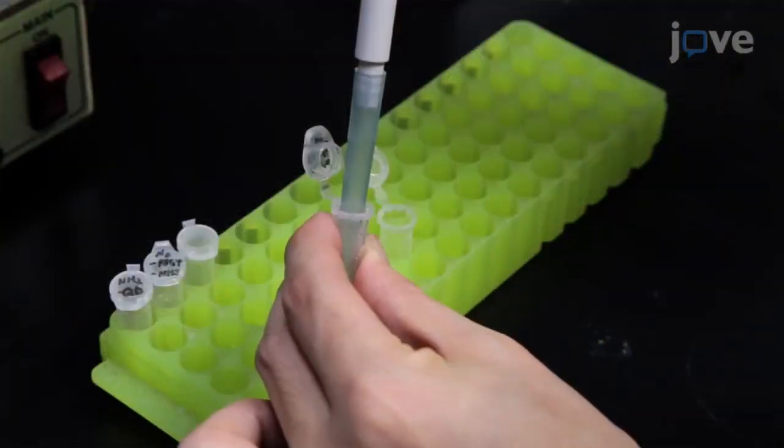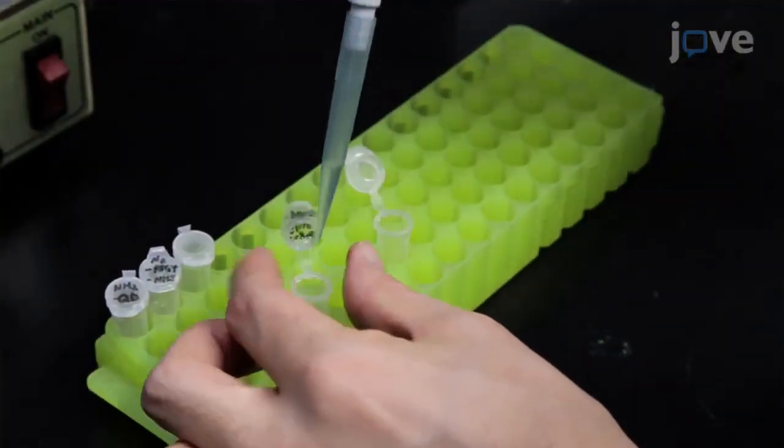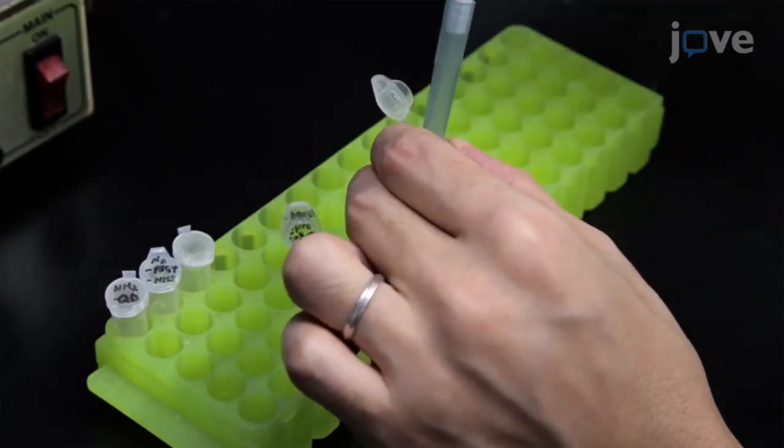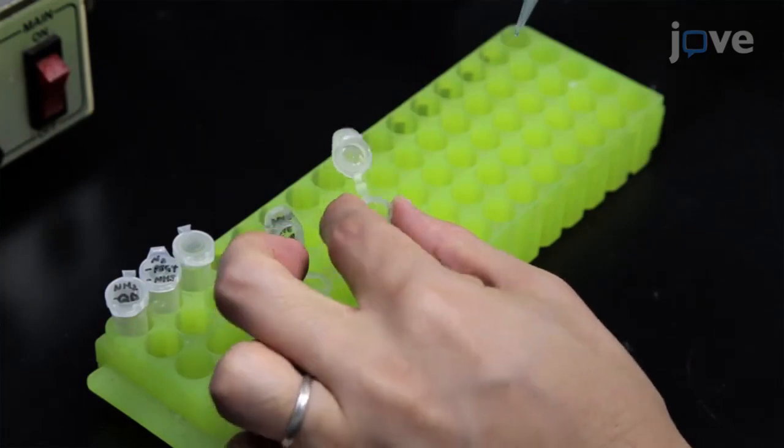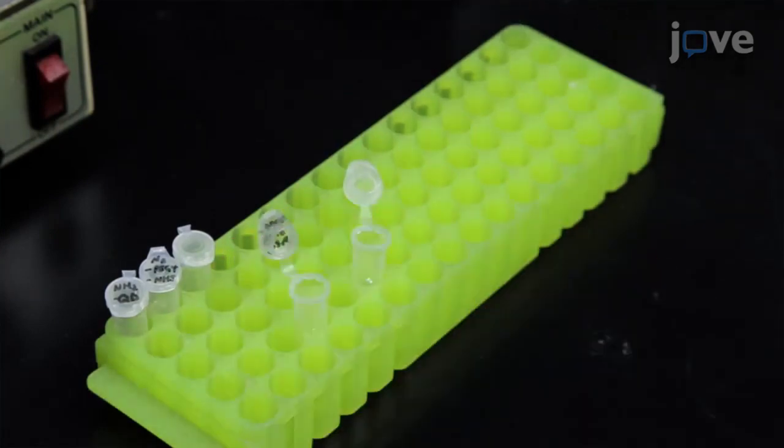Next, dilute the stock solution of caged molecular glue-linked dibenzocyclo-octane to 50 micromolar with DMF and add 200 microliters of it to the post-dialysis solution.